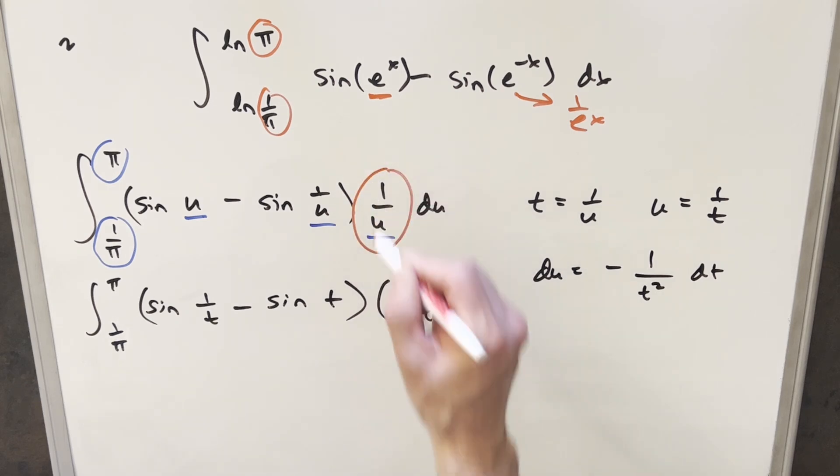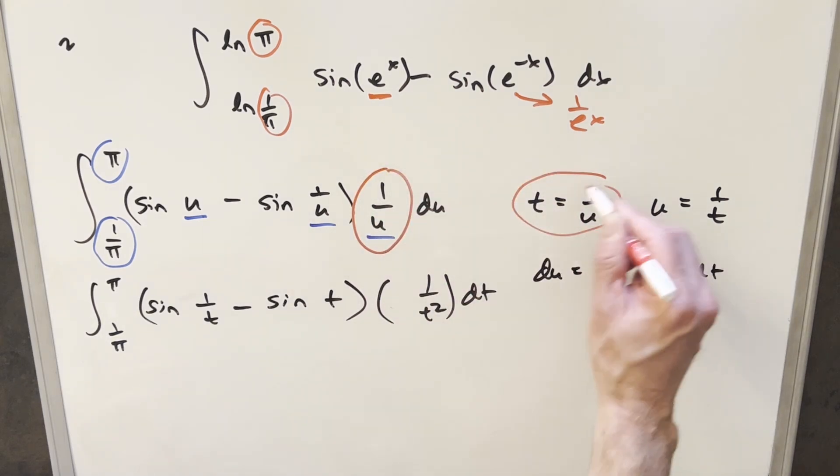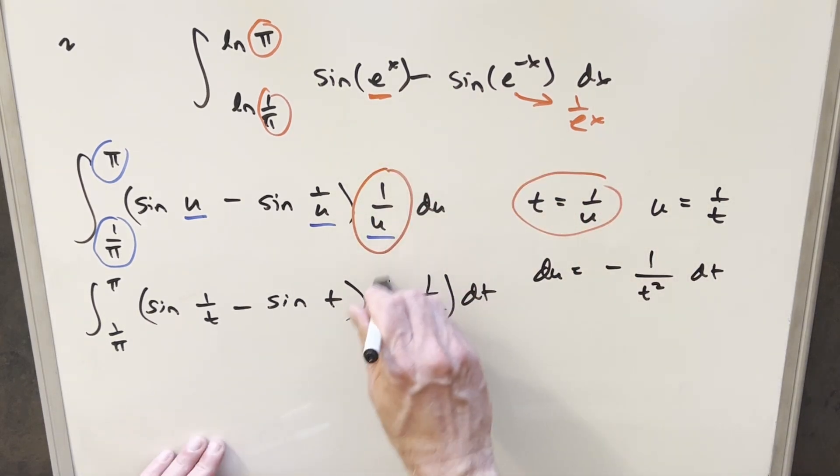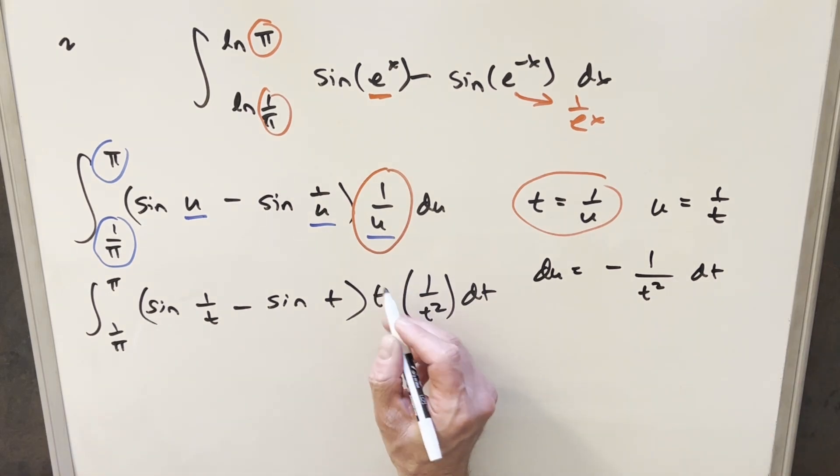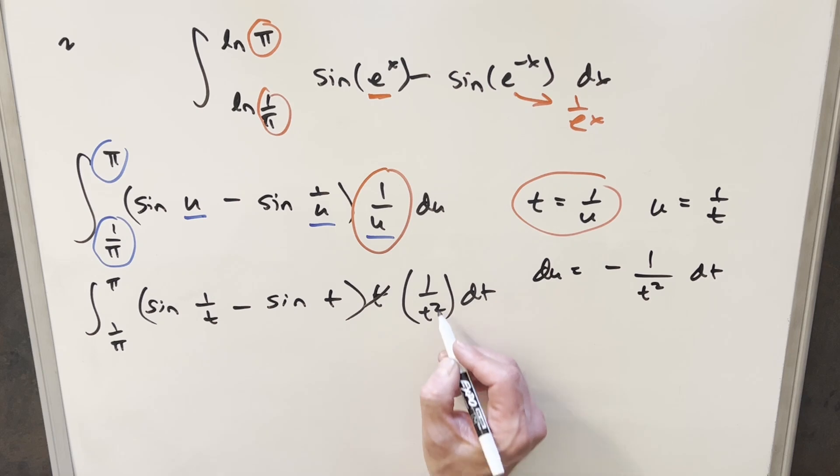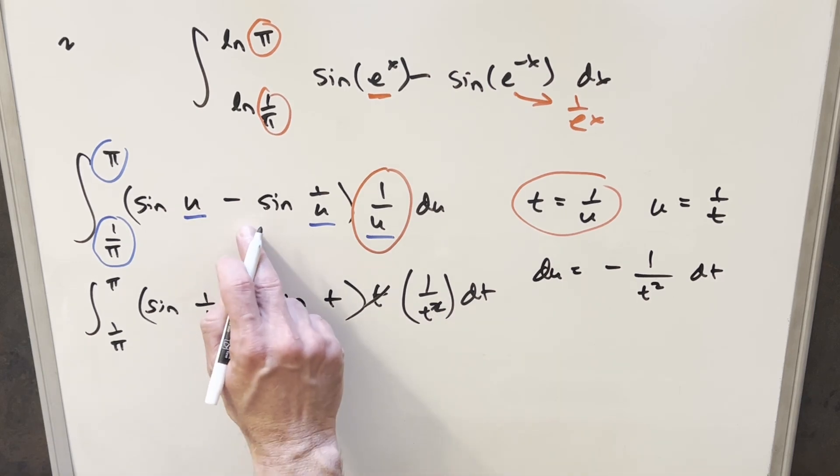Sorry, I just noticed I missed one term. We had this 1 over u here, and 1 over u is t. So what I need to do is add that one in. That's going to give me, I'm just going to write that in. We'll have a t right here for this term. But then I'll take this t and cancel with one of these. This becomes 1 over t. And what I'm trying to do is get this integral to look like this one.